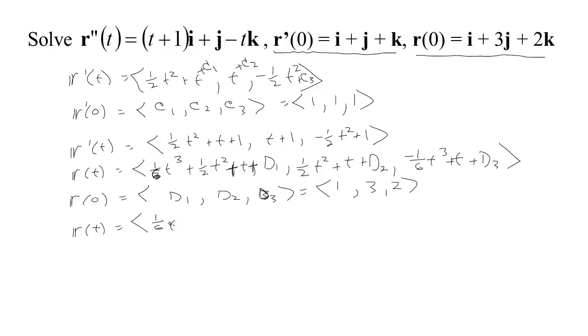So we have 1 sixth t cubed plus 1 half t squared plus t plus 1, that's my x coordinate. And then I have 1 half t squared plus t plus d2, which turned out to be 3, and minus 1 sixth t cubed plus t plus d3, which turned out to be 2. There's my position function.